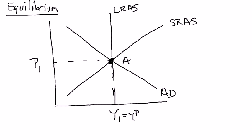So to summarize: a short-run equilibrium is where your short-run aggregate-supply and aggregate-demand curves intersect. A long-run equilibrium occurs where that equilibrium level of output, Y1, just so happens to equal potential, because the long-run aggregate-supply curve is vertical at that point — meaning all three curves intersect at the same spot.